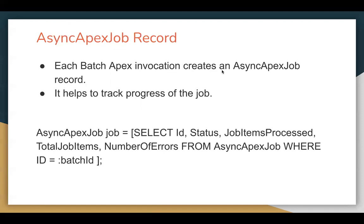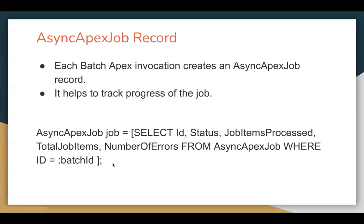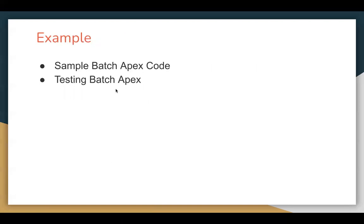Each Batch Apex invocation creates an AsyncApexJob record that helps track the progress of the job. Using the batch ID received earlier, you can query it: SELECT Id, Status, JobItemsProcessed, TotalJobItems, NumberOfErrors FROM AsyncApexJob WHERE Id = :batchId. This allows you to see different properties of the job. In the next video, you will see how to implement Batch Apex code and its test class.